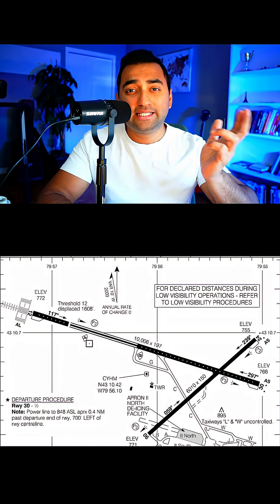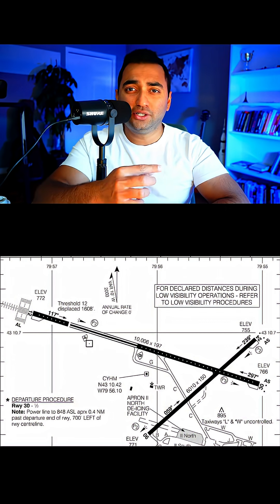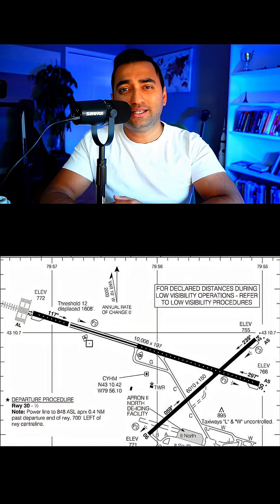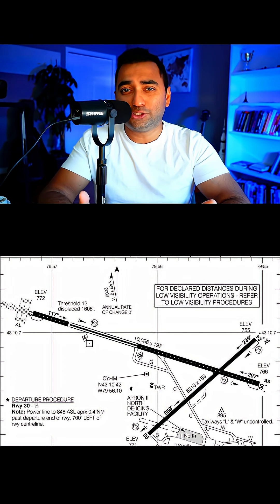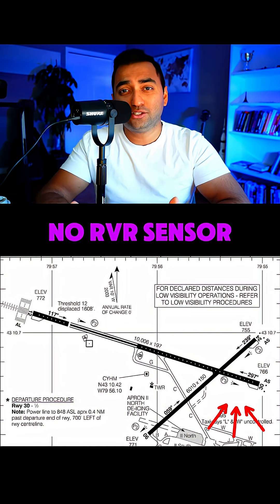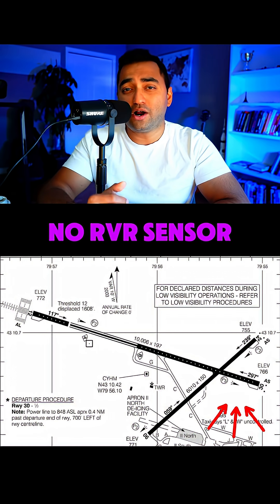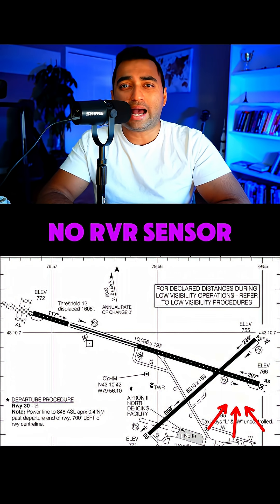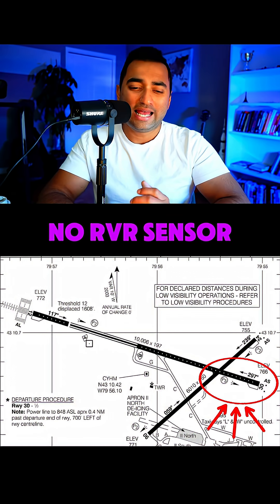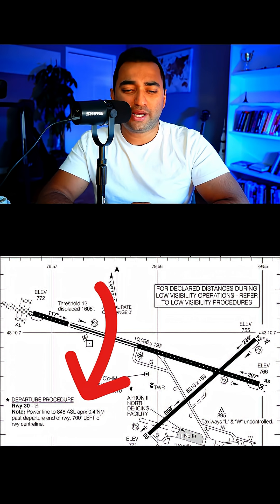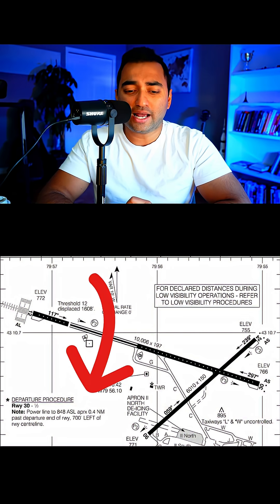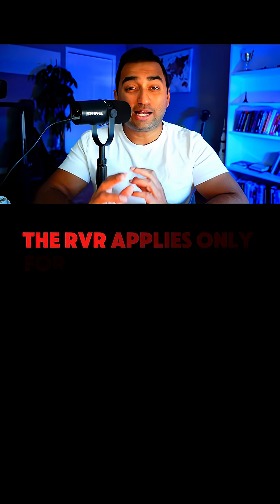But if you're departing runway 30 on the opposite end, you'll notice there's no RVR sensor listed. In that case, you can still depart as long as you have the ground visibility of a half statute mile. You can see on the departure procedures page that for runway 30, you need a half mile visibility.